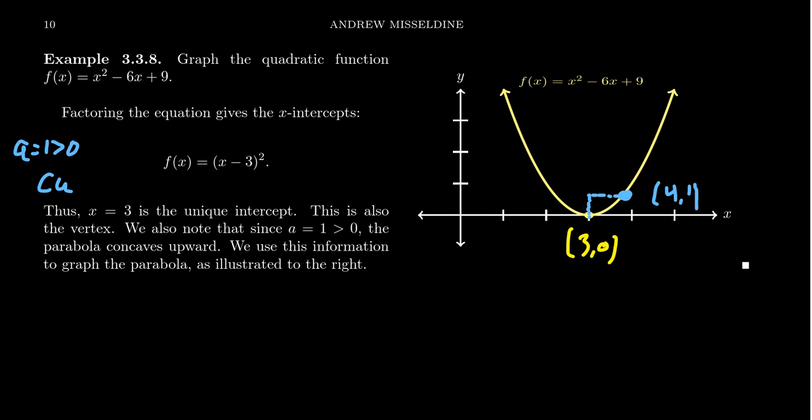And then using symmetry, because the function is symmetric with respect to the line x equals 3, we can find another point using reflection here, say at 2, 1. And then using those three points, we can connect and make our parabola, like so.